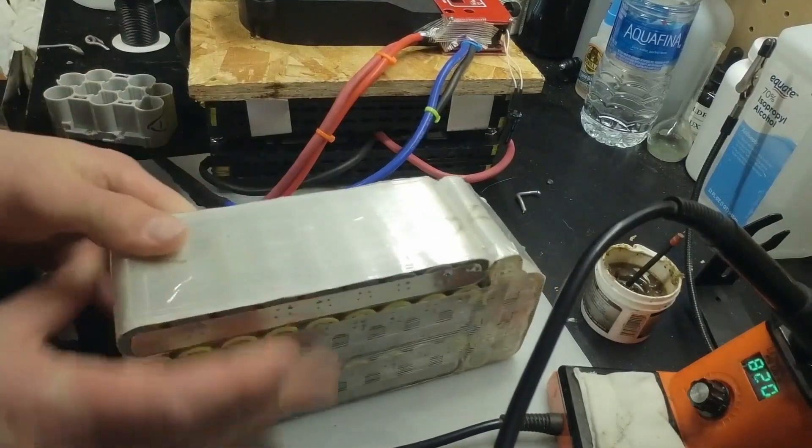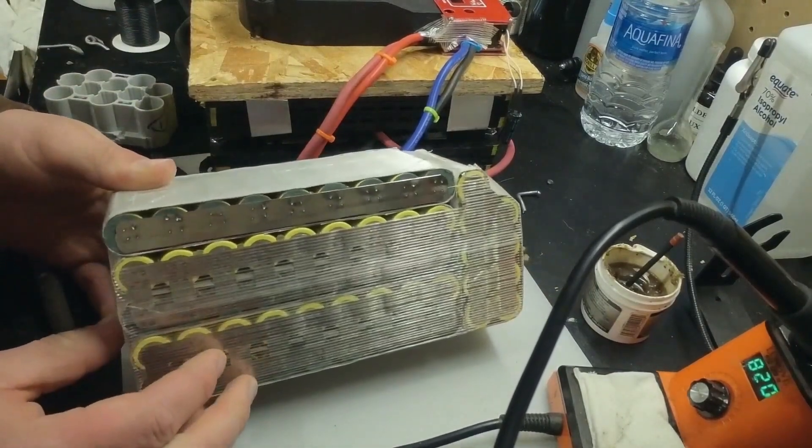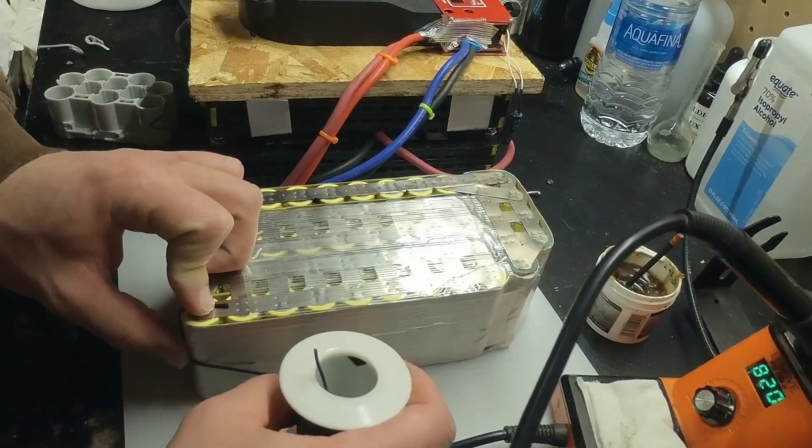You can see I added the short double stacked 1S9P groups to the end of the 5S packs, and am starting to incorporate the balance leads.